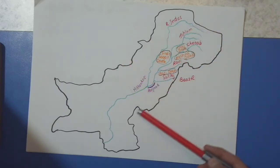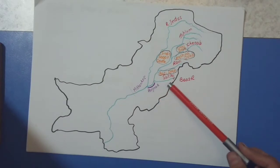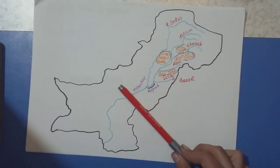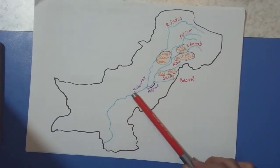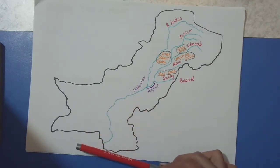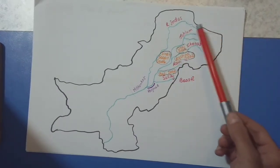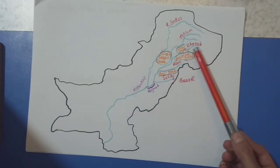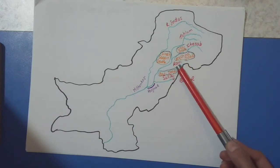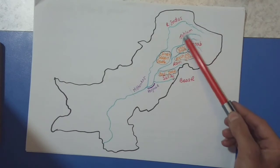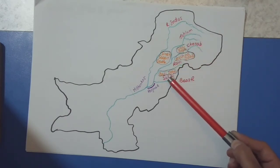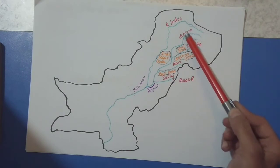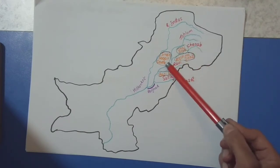Now let's talk about the Upper Indus Plain and the Lower Indus Plain. This whole part is called the Upper Indus Plain — can you see this dotted line? Till here. When the Indus Plain becomes just one river flowing down as a single river, that's when it's called the Lower Indus Plain. Beginning from the top, it's Jehlam, Chenab, Ravi, and Satlaj. Remember these tributaries' names and how they join River Indus. Jehlam is joined by Chenab, then Ravi, then finally Satlaj.